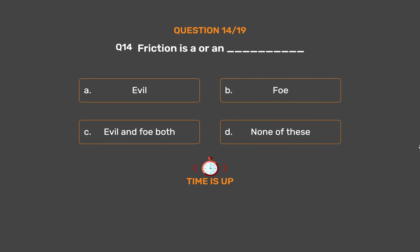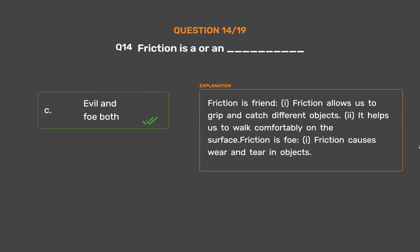The correct answer is Option C: Evil and foe both. Friction is a friend — it allows us to grip and catch different objects, and it helps us to walk comfortably on surfaces. Friction is also a foe — it causes wear and tear in objects.